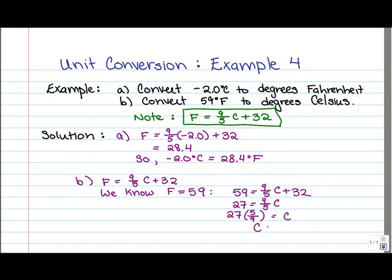And if you work this out, let me just write C on the left hand side now, as that's how we're used to seeing it. You'll get an answer of 15. So what this means then is that 59 degrees Fahrenheit is equal to 15 degrees Celsius. And we finish solving the problem.